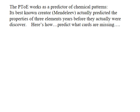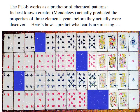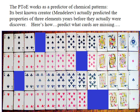The periodic table of elements works as a way of predicting chemical patterns. Its best-known creator, a gentleman by the name of Mendeleev, actually predicted the properties of three elements years before they were actually discovered in the laboratory. Here's how he did it: we have a very organized system for laying out playing cards, and you'll see that just by looking at the patterns both vertically and horizontally, we can tell what's missing.